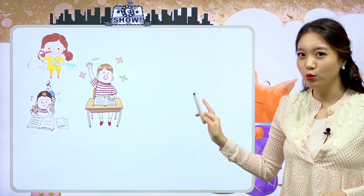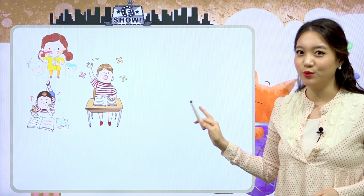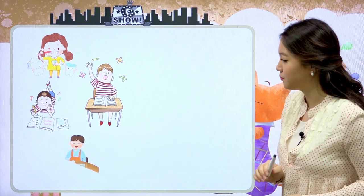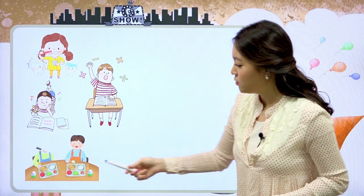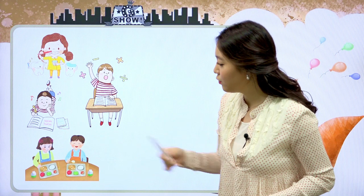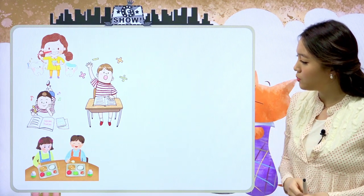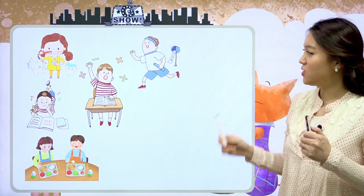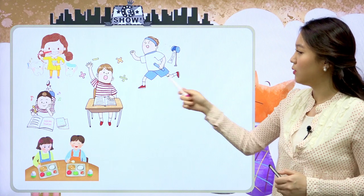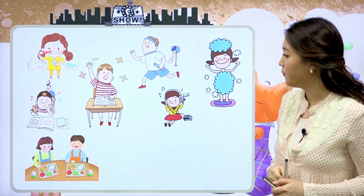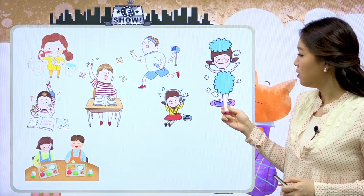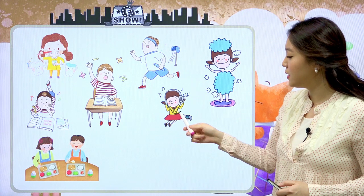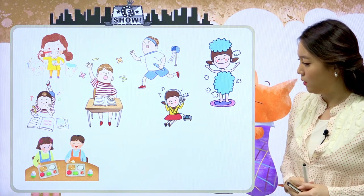여기에 있는 그림들에는 공통점이 있어요, 친구들. 그게 무엇인지 한번 잘 찾아보세요. 식사를 하고 있네요. 점심일까요? He's running, right? Exercising. 운동을 하고 있고요. 뭐하고 있죠? Shower을 하고 있고, listening to music. 음악을 듣고 있네요.